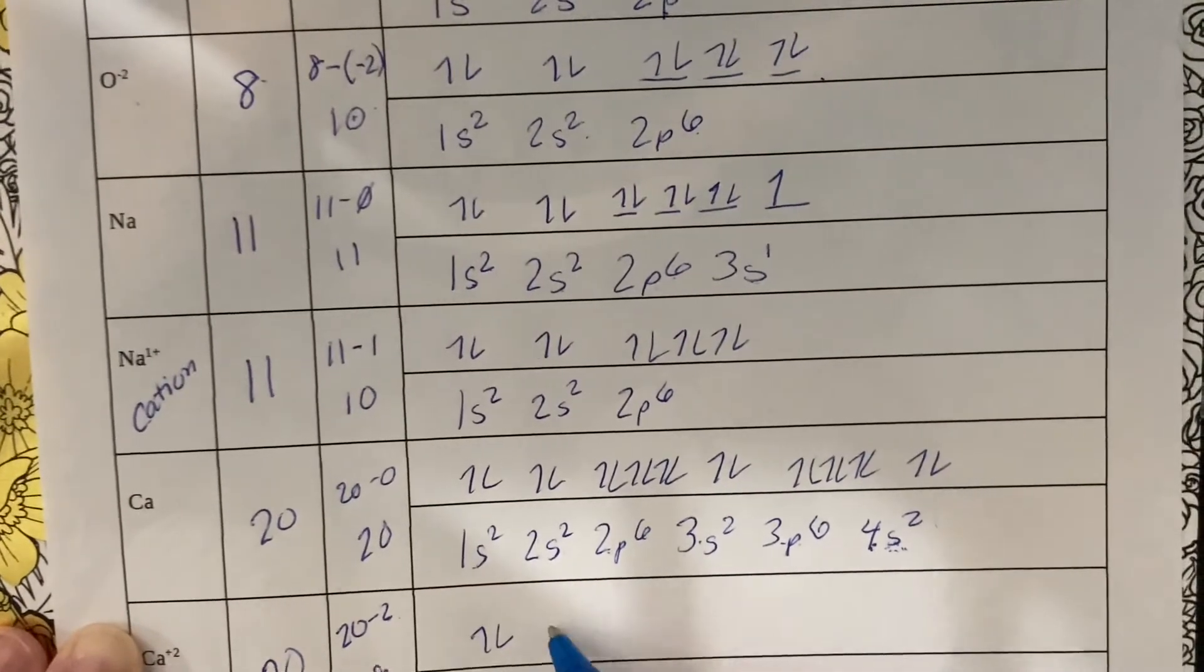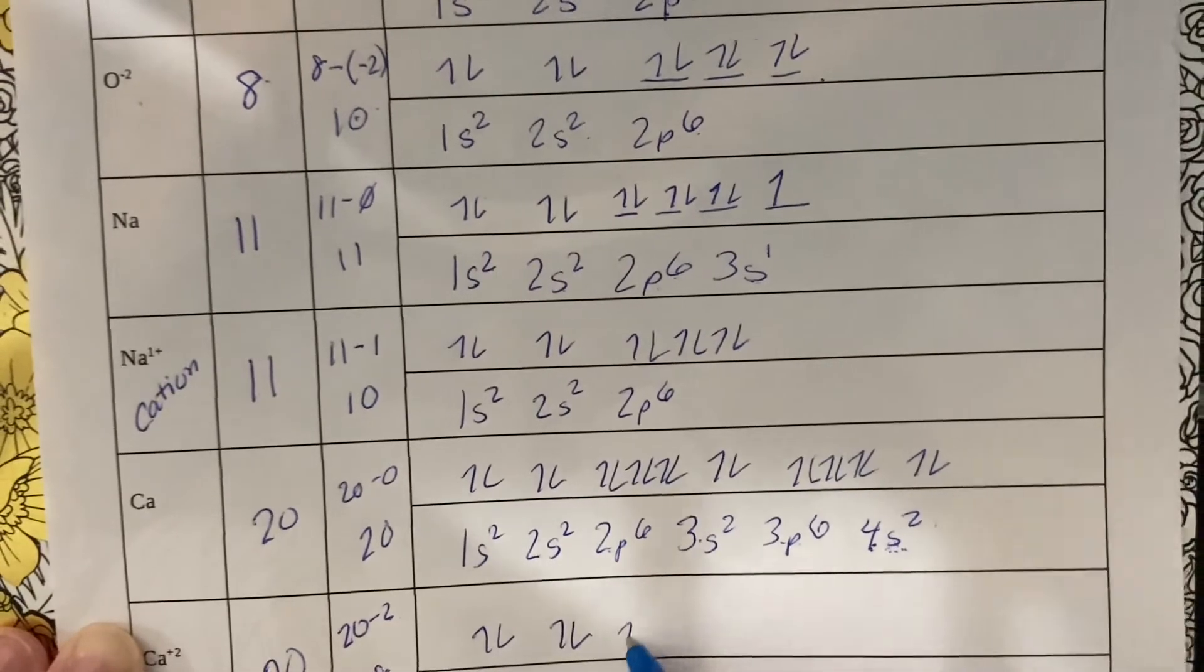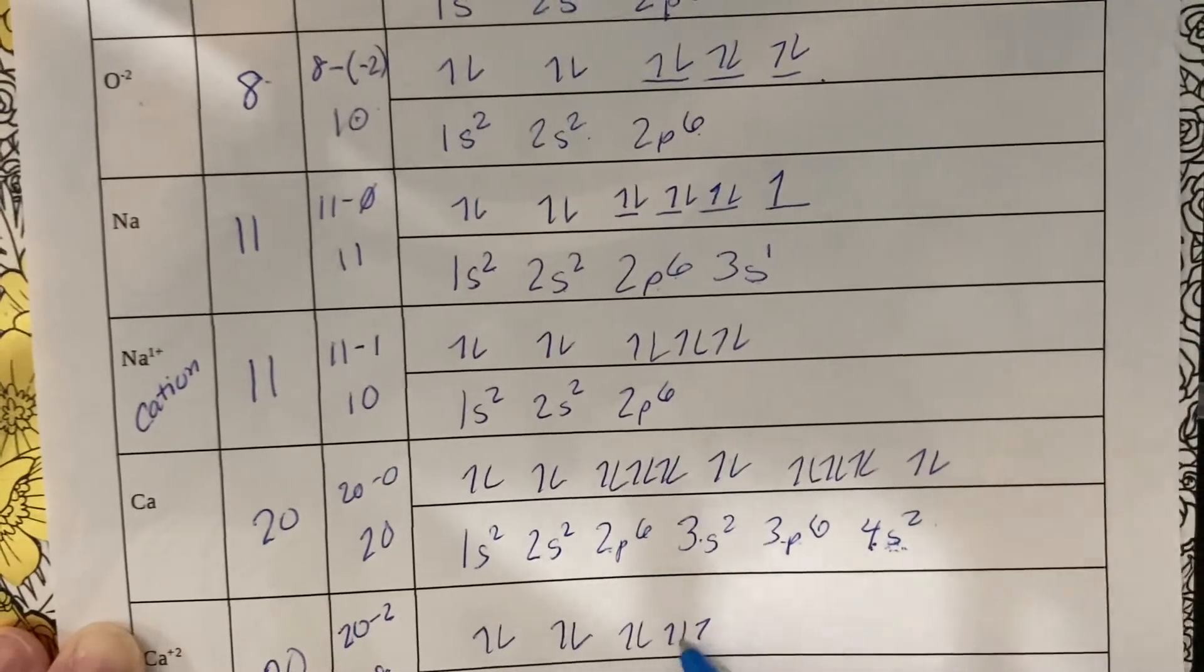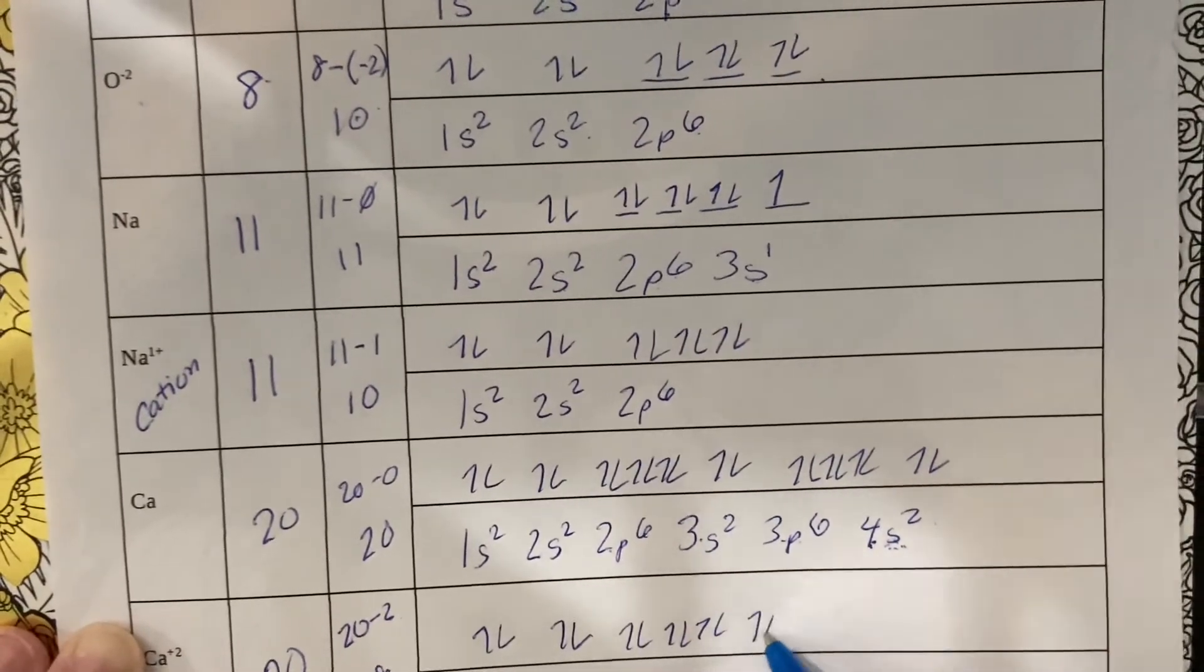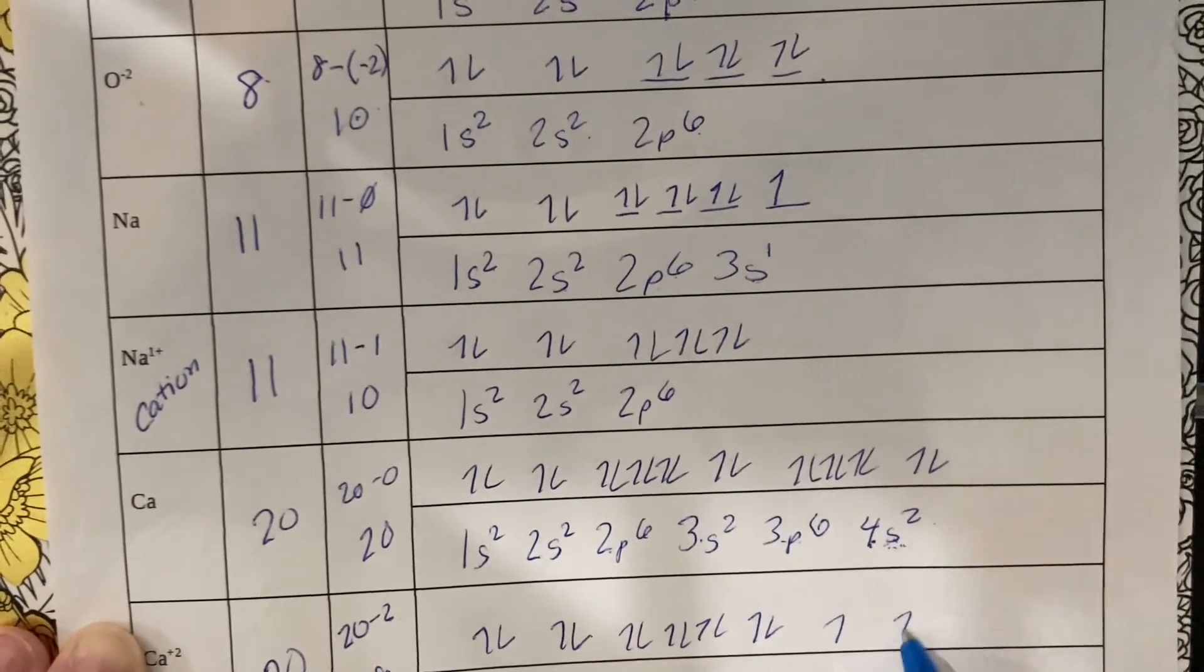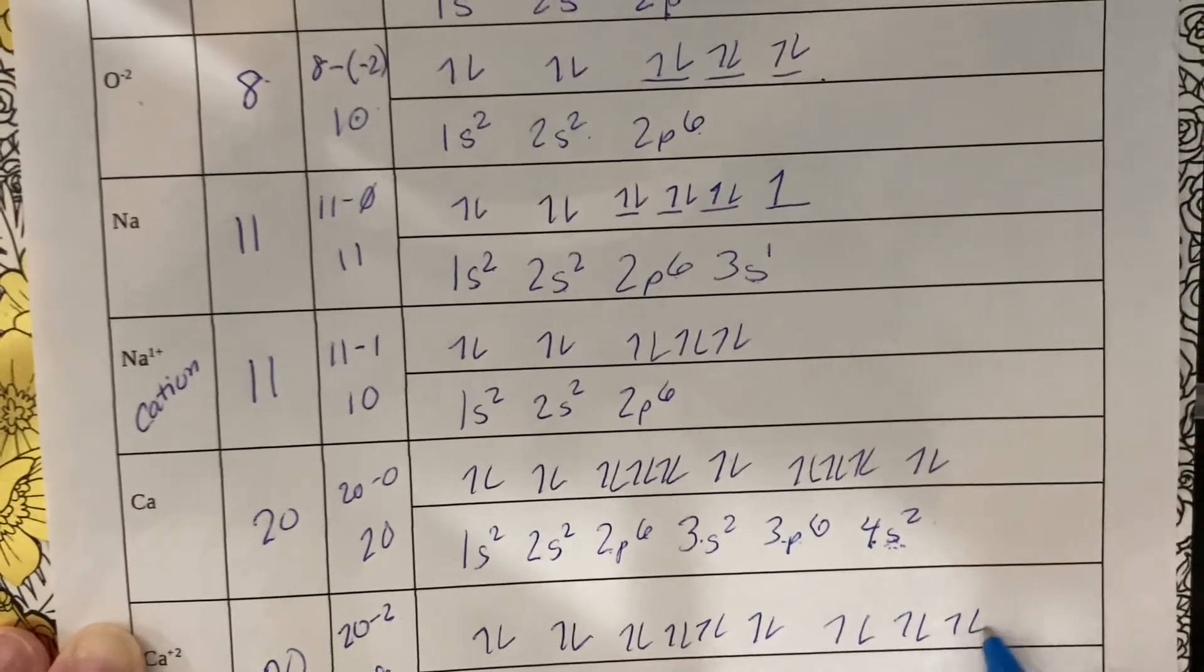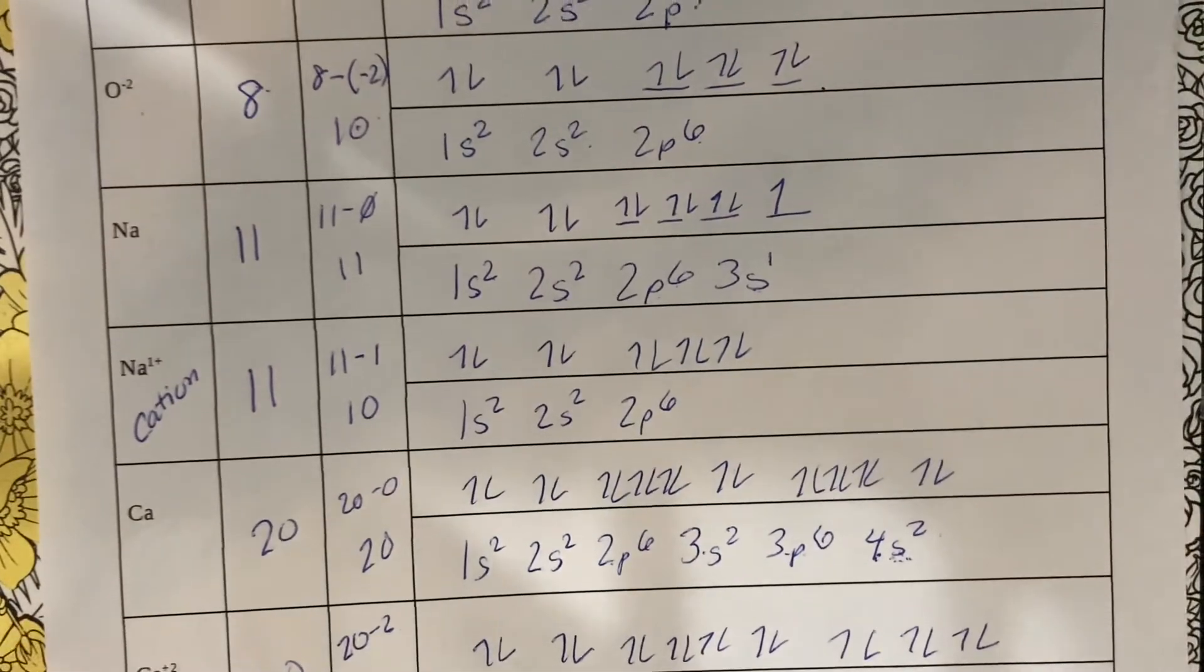The s's get an up and down, the p's get split in three for six total here, the s's get an up and down, the p's get split into three, and there you have it.